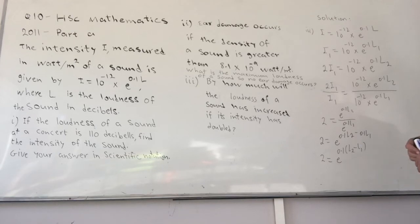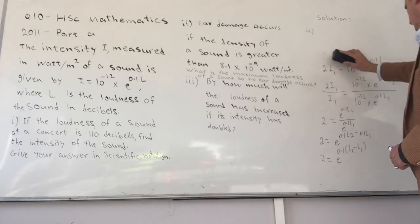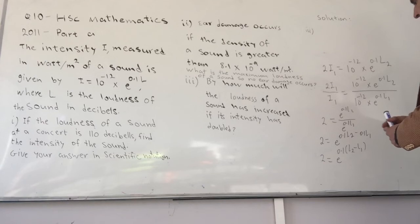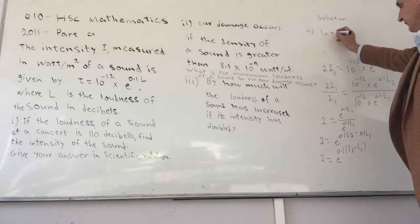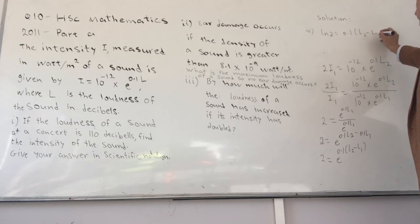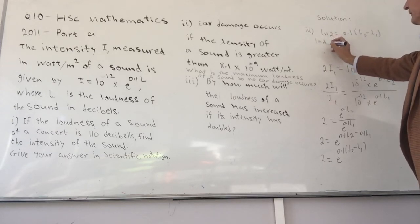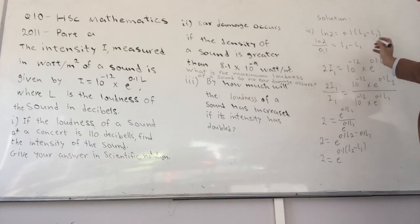Next step is to take ln from both sides. If I take ln from both sides, I will have ln 2 equals 0.1 times (L2 minus L1). Then I divide both sides by 0.1, which becomes ln 2 divided by 0.1 equals L2 minus L1.